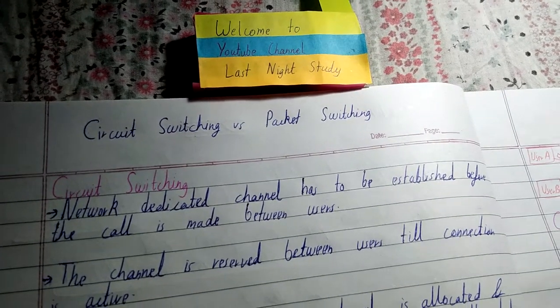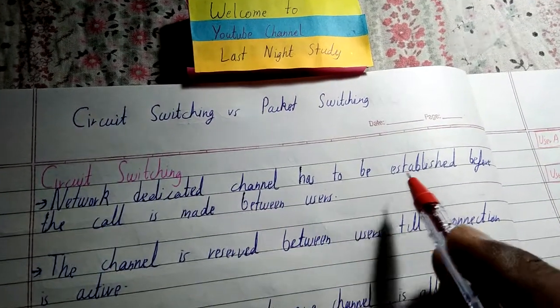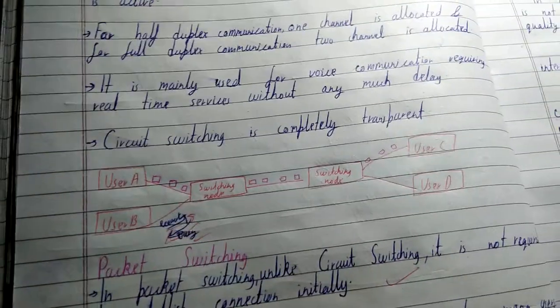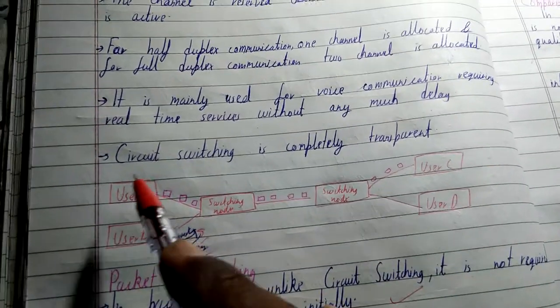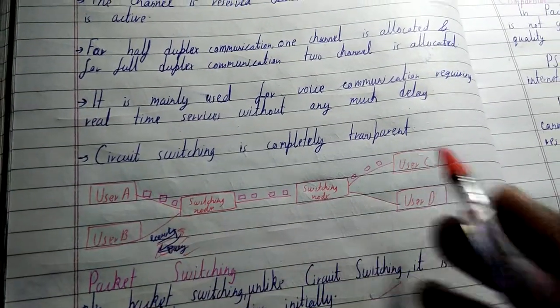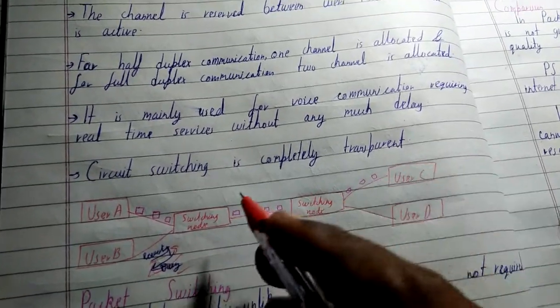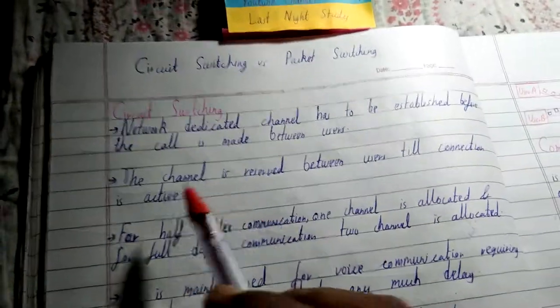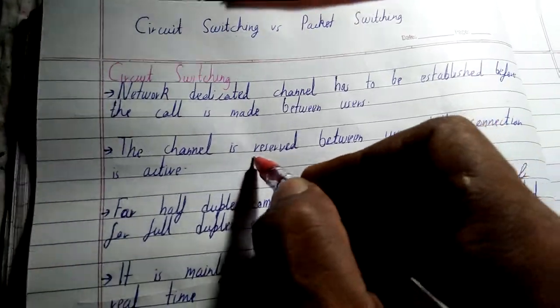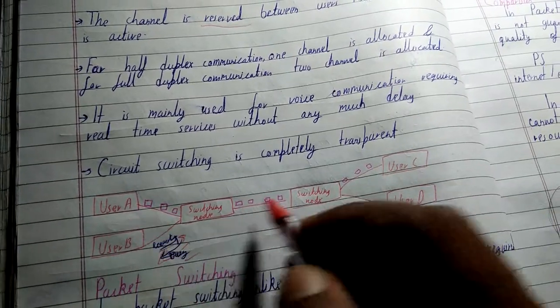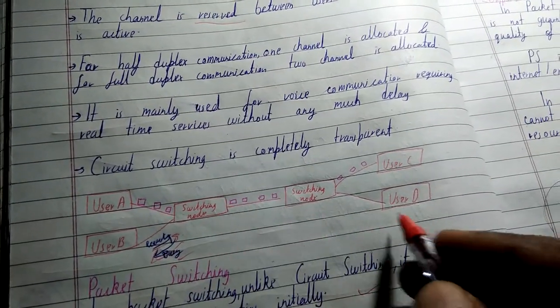First of all, let's discuss circuit switching. A network dedicated channel has to be established before the call is made between users. Looking at the diagram, if user A wants to communicate with user C, it needs to have a network dedicated channel before any kind of communication. The channel is reserved between the users till the connection is active.